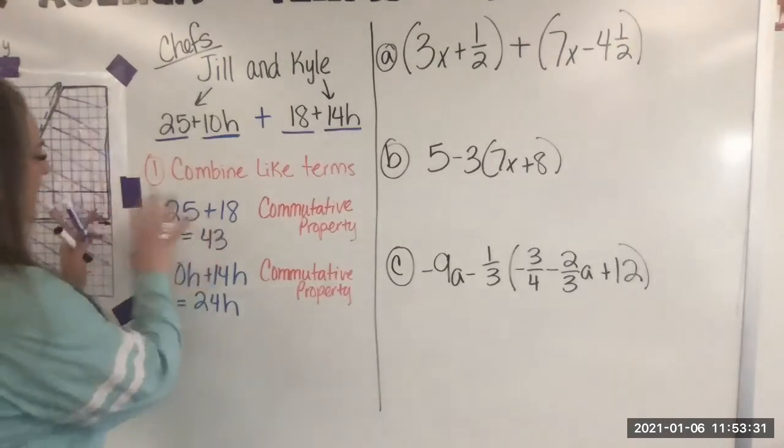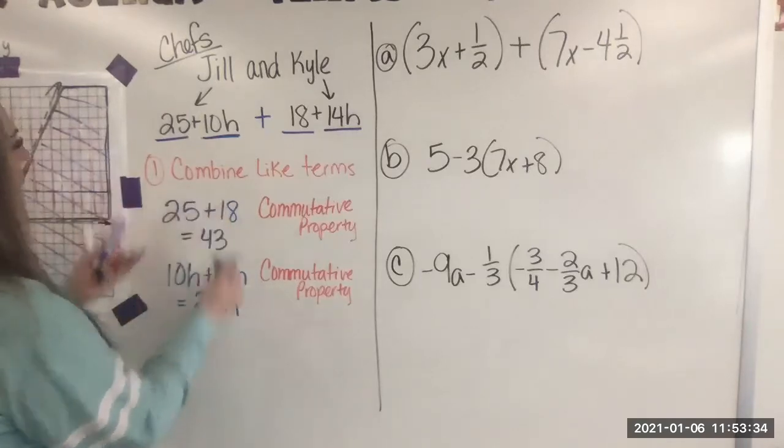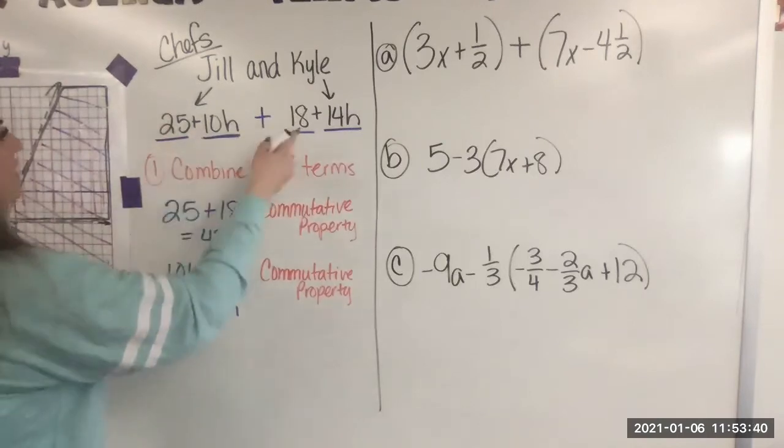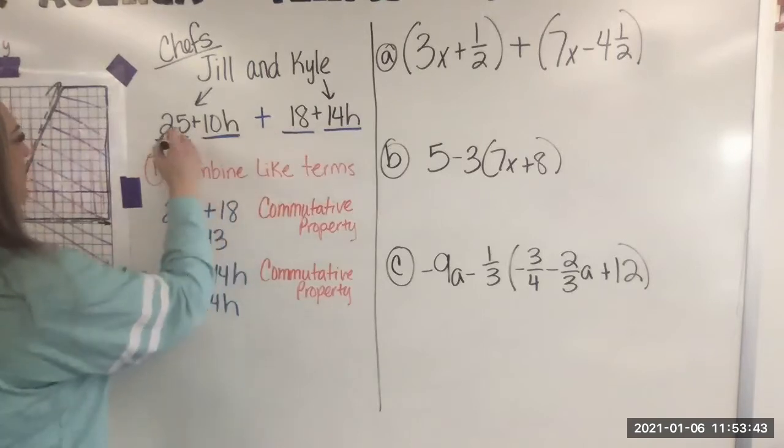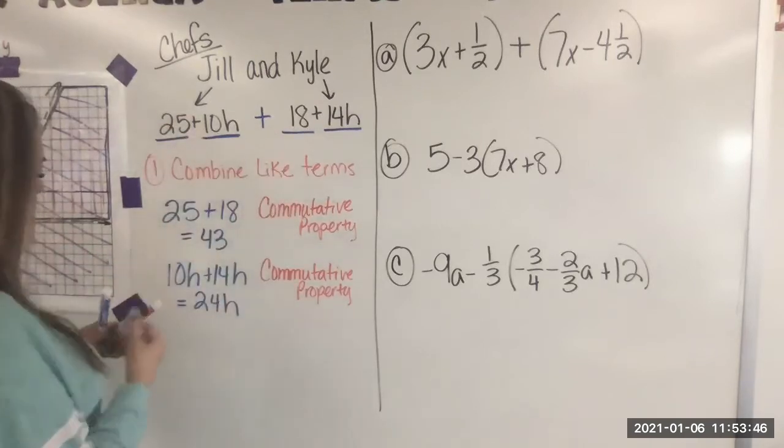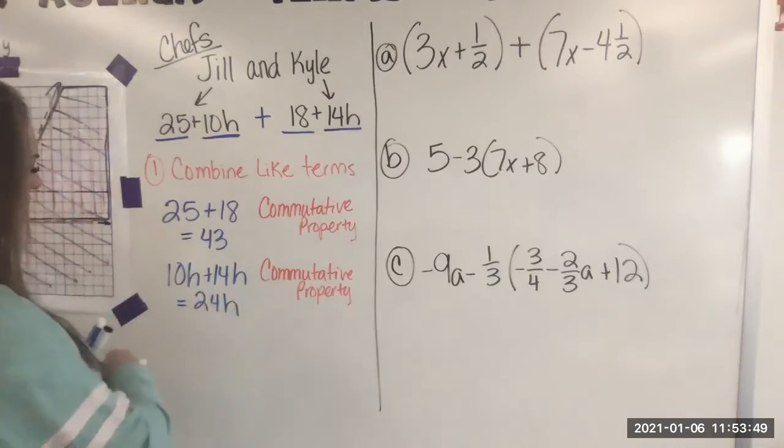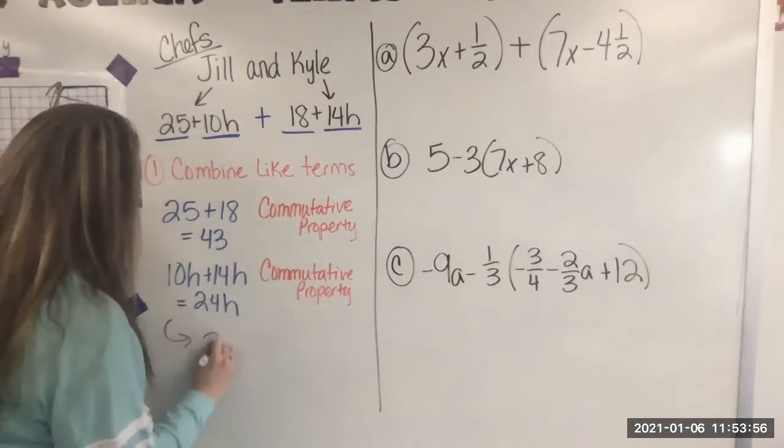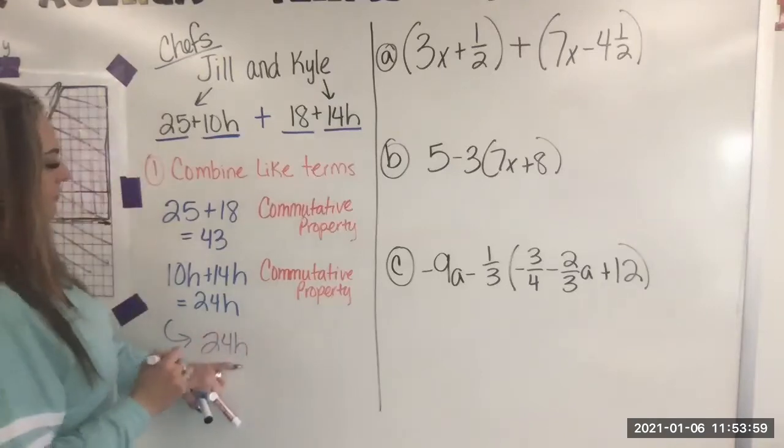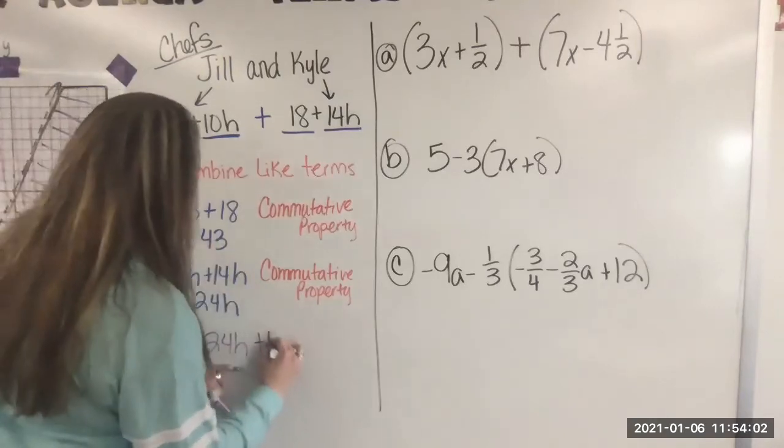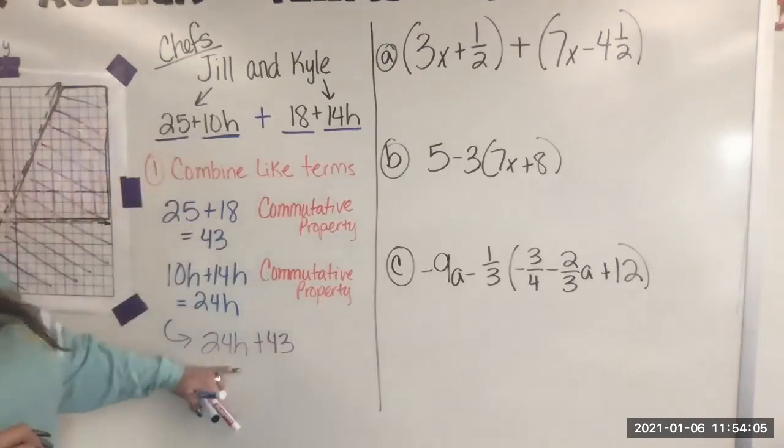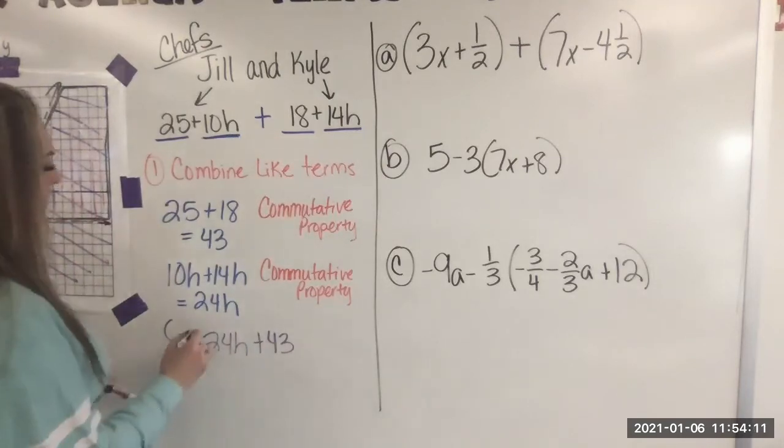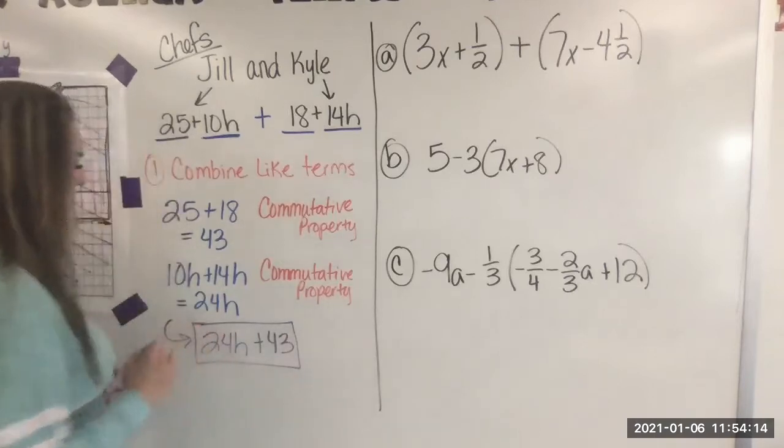Now we can either write this out like this, or we can think of it just as, you know, sometimes there's a way if you're looking at it, you're like, well, I know this and this go together. So I'm going to add those and put my answer. What you want to do is when you write your final answer, you want to put the term with the variable first. So when the final answer is written, we're going to start with 24H. Then we're going to put our positive 43. All of these terms are positive. So I don't have any negative symbols or subtraction in here. And this is how we combine like terms and write them together.